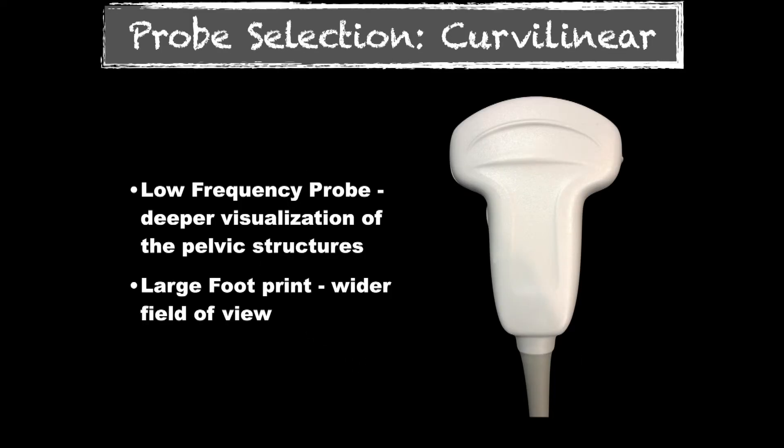I like to use a curvilinear probe. You could use a phased array probe — it doesn't really matter as long as it's got a lower frequency. You want a lower frequency so you can look further down into the pelvis. Most of these structures are not going to be real close to you, so using a curvilinear or lower frequency probe is ideal. I do like the larger footprint of the curvilinear probe — it gives you a little bit better lateral resolution on your images.